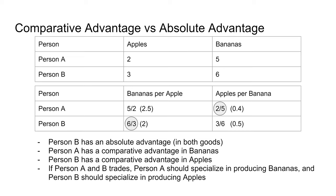Person B has a comparative advantage in apples because they only sacrifice two versus two and a half. Note that if one person has the comparative advantage in one good, the other person has the comparative advantage in the other good — you cannot have one person with comparative advantage in both goods. It is possible, however, for one person to have absolute advantage in both items. If both Person A and Person B come together and trade, it's recommended that Person A produces bananas and Person B produces apples.